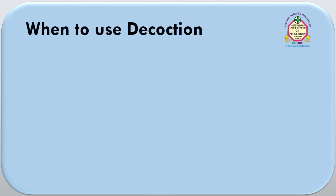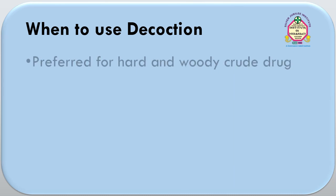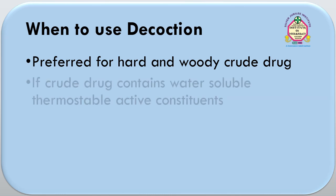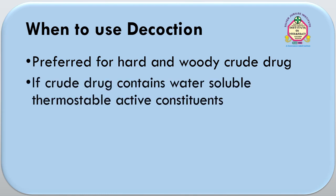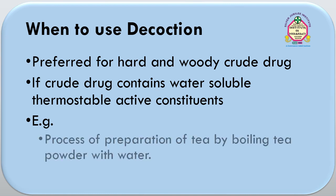Now we will discuss when we can use the decoction process. Decoction is preferred when the crude drug is hard and woody, as boiling water can penetrate well into hard or woody drugs and helps in extraction. This process is also used if the crude drug contains water-soluble, thermostable active constituents. It is not used for thermolabile constituents. An example of decoction used in our house is the preparation of tea by boiling tea powder with water.